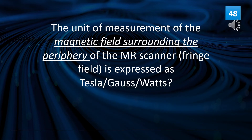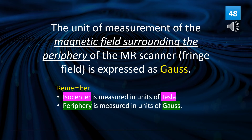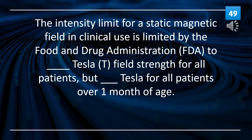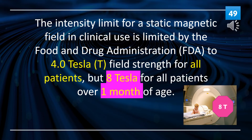The unit of measurement of the magnetic field surrounding the periphery of the MR scanner (fringe field) is expressed as Gauss. The intensity limit for a static magnetic field in clinical use is limited by the FDA to 4 Tesla for all patients, but 8 Tesla for all patients over one month of age.